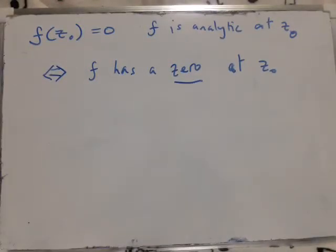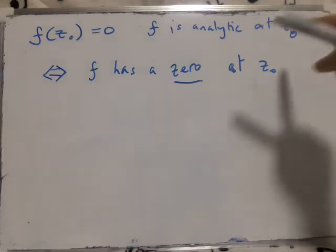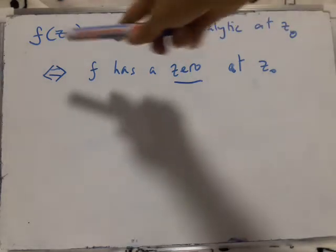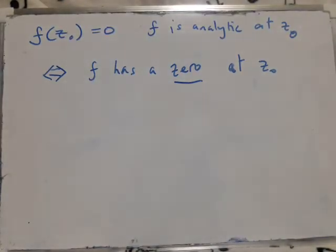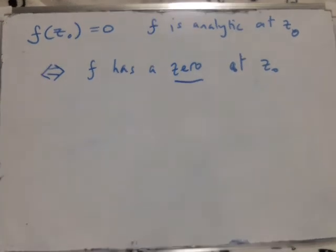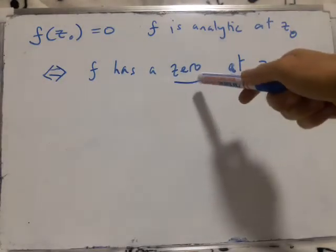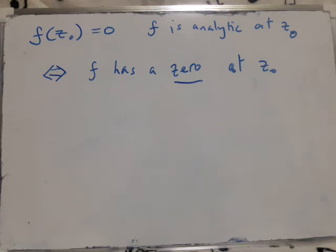So if we have a function which is analytic at z0, and f of z0 is 0, then we say that function has a zero located at z0. Now there's different types of zeros.